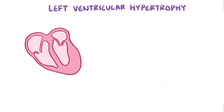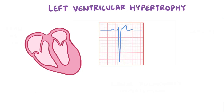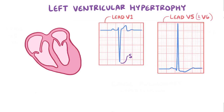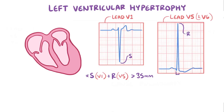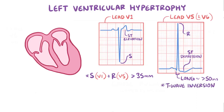In left ventricular hypertrophy, the pattern is almost the opposite of what happens in right ventricular hypertrophy. Lead V1 has even more positive charge traveling away from it than usual, making the S wave really deep. Meanwhile, lead V5 and V6 are located on the side of the left ventricle, and therefore have an enormous R wave. The most commonly used voltage criteria to identify left ventricular hypertrophy is that adding up the S wave in V1 and the tallest R wave in V5 or V6 has to be over 35 mm. Additional criteria include things like having an R wave that goes on for longer than usual, typically over 50 ms, as well as ST segment elevation in V1 and ST segment depression and T wave inversion in V5 and V6. These are all signs that the left ventricle is straining during muscle contraction.